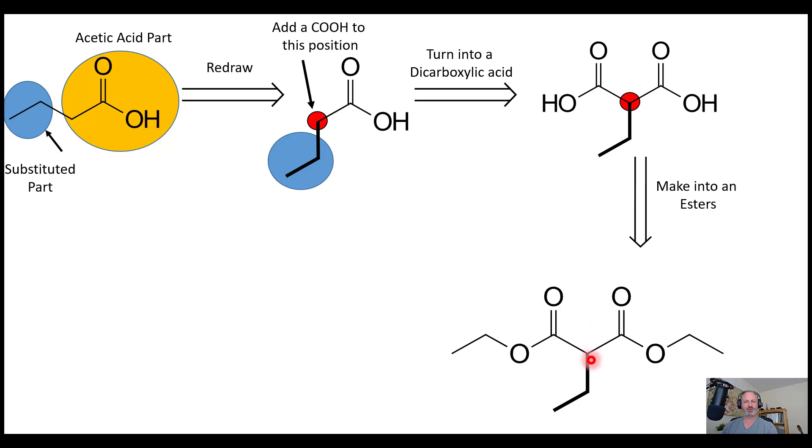At that point in time, we just need to move one step backwards and we need to take off our alkyl group here. We do that by removing our ethyl group and turning it into some type of good electrophile. So I'm probably going to put on some type of good leaving group there like a bromide or iodide.